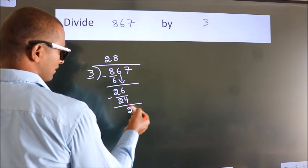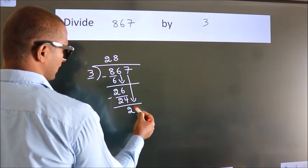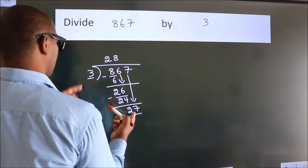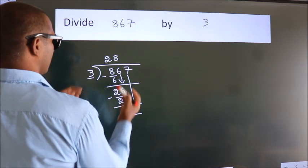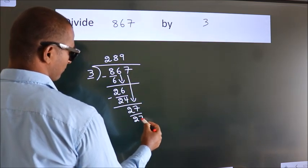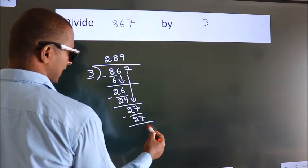After this, bring down the beside number. So 7 down. So 27. When do we get 27 in the 3 table? 3 times 9 is 27. Now we subtract. We get 0.